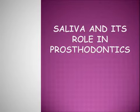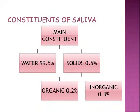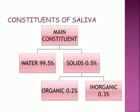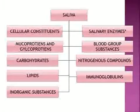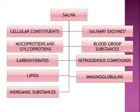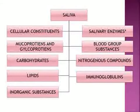In this video we will discuss saliva and its role in prosthodontics. Saliva is composed of 99.5% water and 0.5% solids, which includes 0.2% organic and 0.3% inorganic substances. It constitutes various cellular constituents like yeast, bacteria, desquamated epithelial cells, and leukocytes, as well as salivary enzymes, mucoproteins, glycoproteins, blood group substances, carbohydrates, and nitrogenous compounds.